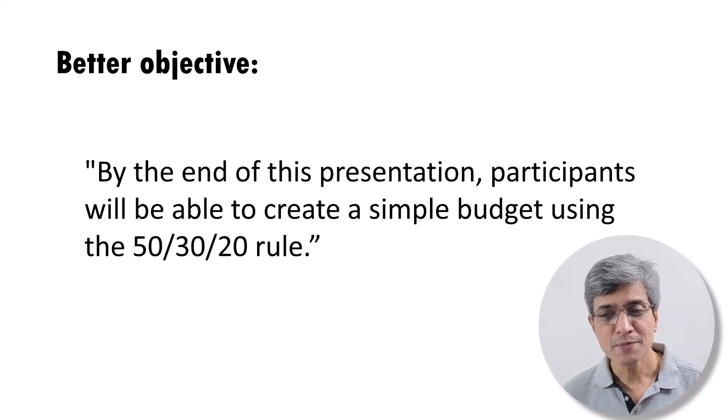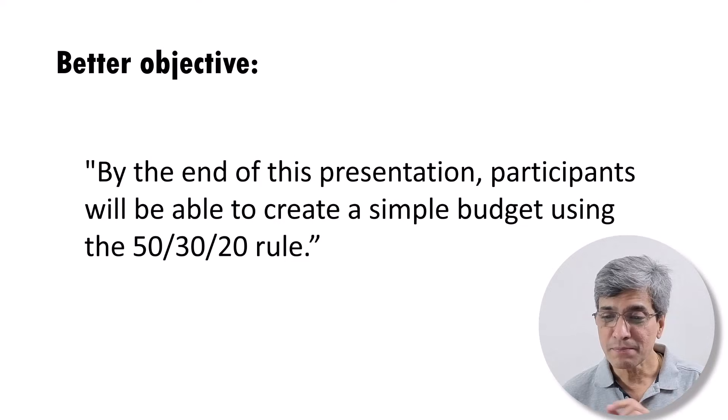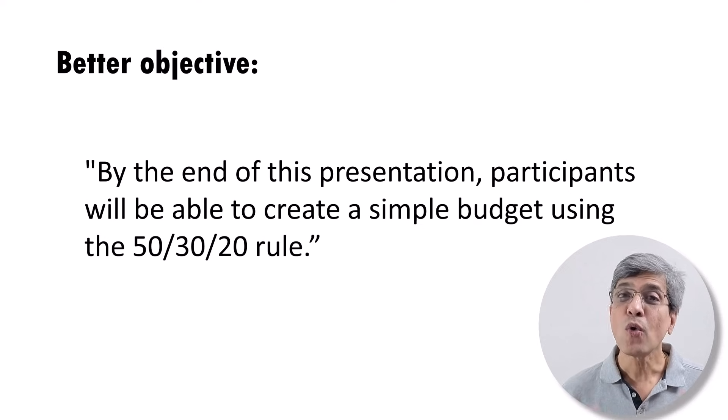Now see how the game changes when you write your presentation objective like this: 'By the end of this presentation, participants will be able to create a simple budget using the 50-30-20 rule.' It's obvious what you will cover — what is the 50-30-20 rule, where it applies, how to apply it with examples, a demonstration, and a small test to see if participants can actually use the rule to create a simple budget. By just making a small shift in how you write your objective, your entire presentation content jumps right in front of you. That is the power of writing a clear objective.